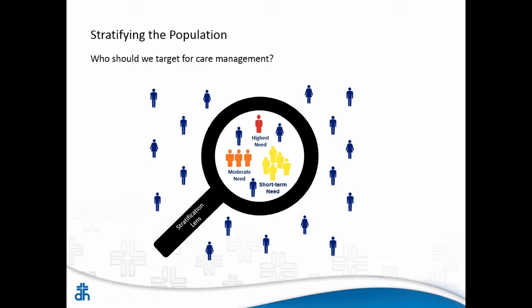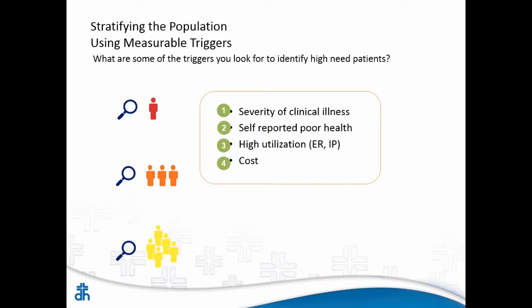We can look at highest needs, modest needs, short-term needs — somebody who just needs help through an acute illness and then they'll be fine again. Mike talked about that black box that all of this goes into. It looks at the severity of chronic illness, a lot of self-reported data, who's utilizing things the most — Steve going to the emergency room, inpatient costs, maybe 10 different medications filled in the last two months — those high-trigger or high-utilization factors.